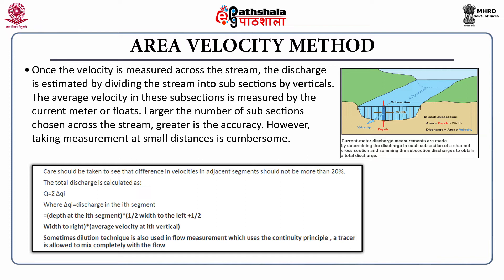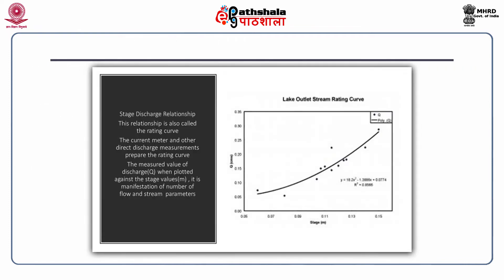We multiply cross-sectional area by the average velocity at each vertical, then add up all the sub-section discharges to get the total stream discharge at that cross section. Once discharge is measured alongside depth from the stage recorder, we can establish a stage rating curve — so if the depth is 5 meters, the corresponding discharge in cubic meters per second is directly readable.